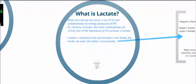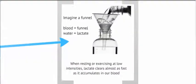But what is lactate? When we exercise, we utilize fat and carbohydrates for energy production. As intensity increases, we use more carbohydrates, and one of the byproducts of this process is lactate. Lactate is a substance that accumulates in our blood. The harder that we work, the faster it accumulates.